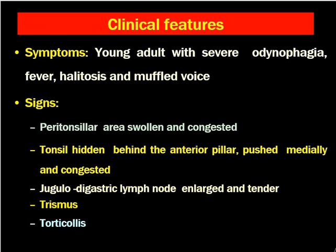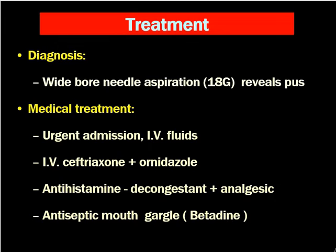In tonsillitis, there will be bilateral complaints in the throat — bilateral throat pain. Most of the time, diagnosis is straightforward. When the patient presents with these features, you can suspect peritonsillar space abscess. But confirmatory diagnosis would be needle aspiration using an 18-gauge needle. If that reveals pus, then we will be sure the patient has an abscess in the peritonsillar area.